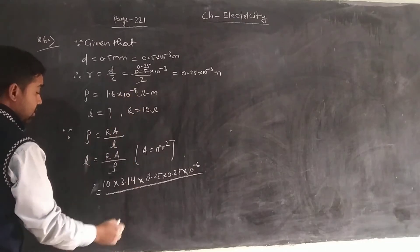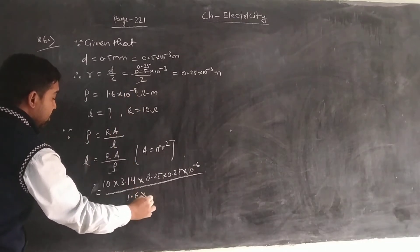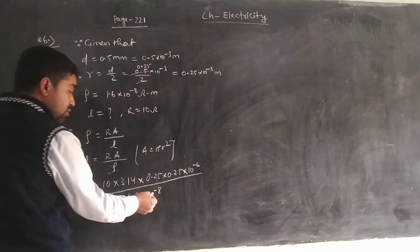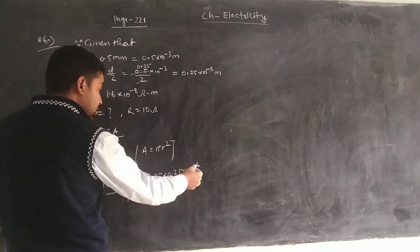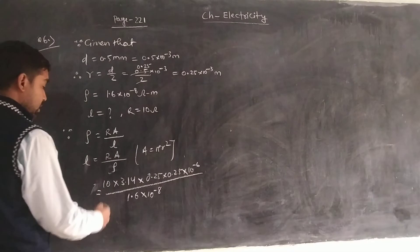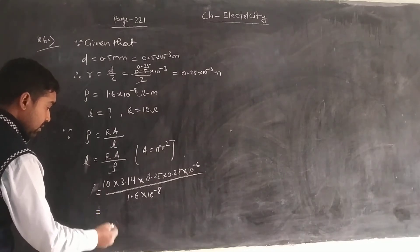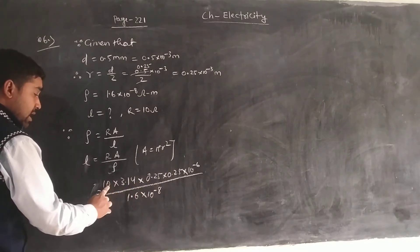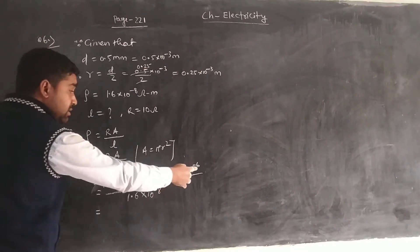Divided by resistivity, which is for copper material 1.6 into 10 to the power minus 8. This 10 to the power minus 8, when moved up becomes 10 to the power plus 8, and 9 minus 6 gives us 10 to the power plus 3.